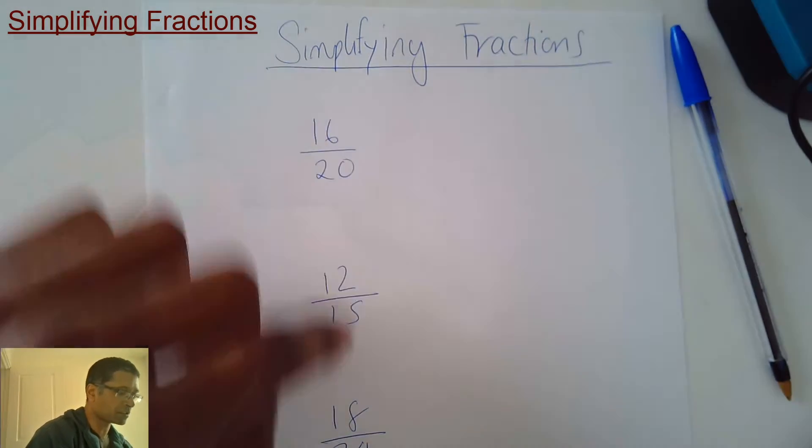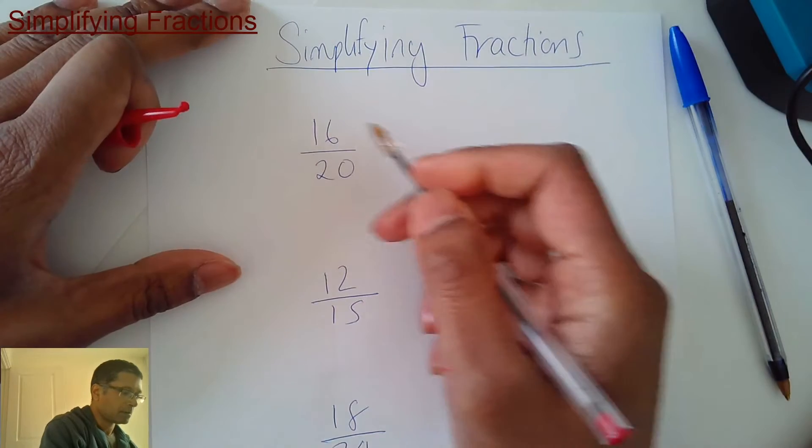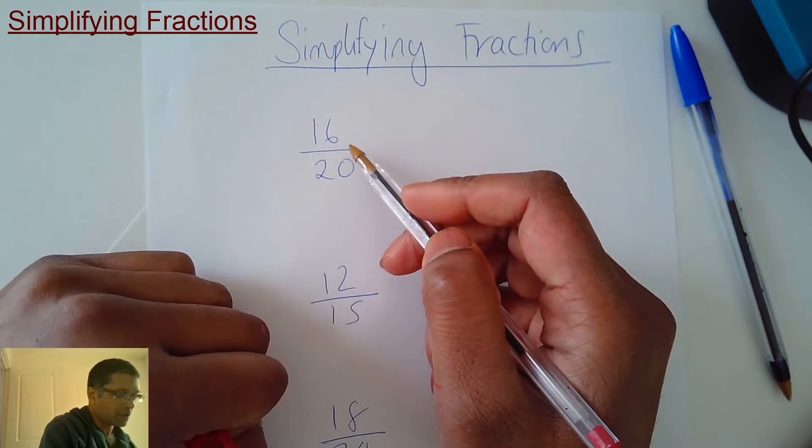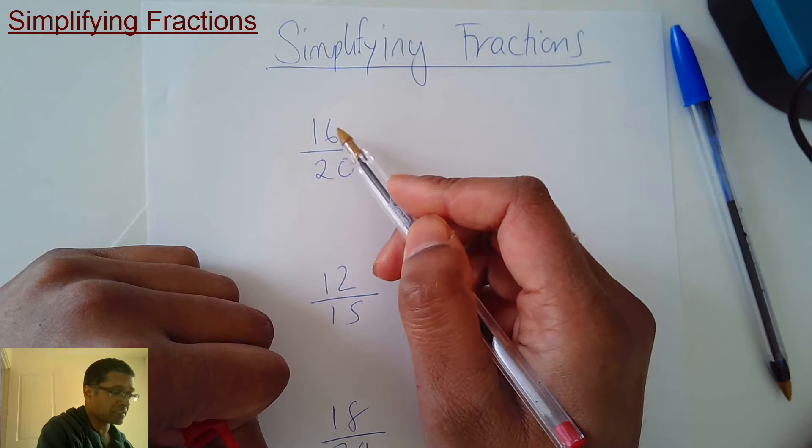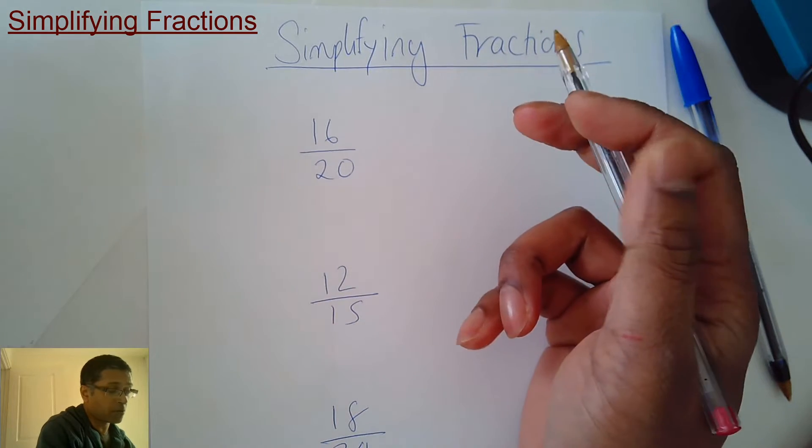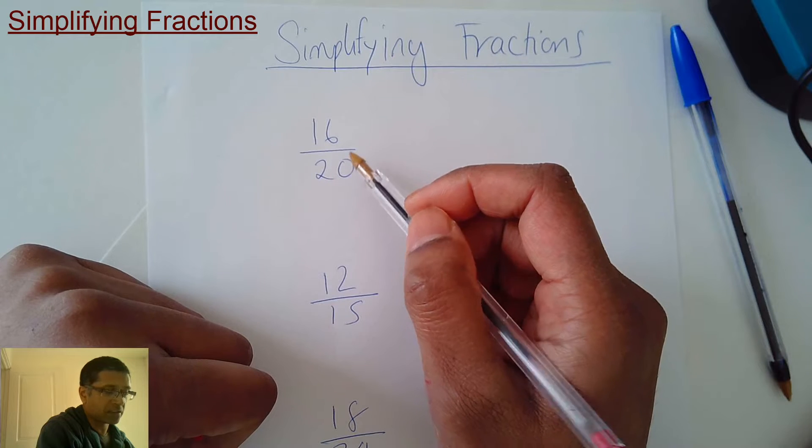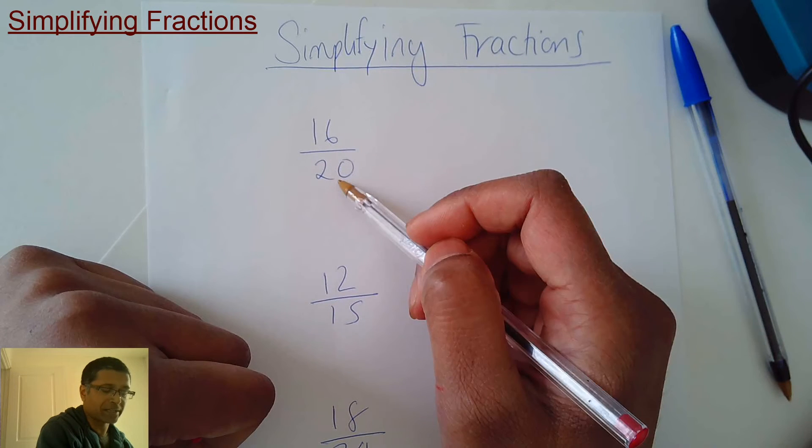Simplifying fractions. These fractions can be simplified. Think of a number, the biggest number that goes into 16 and 20. Or in other words, which times table has got 16 and 20 in it?